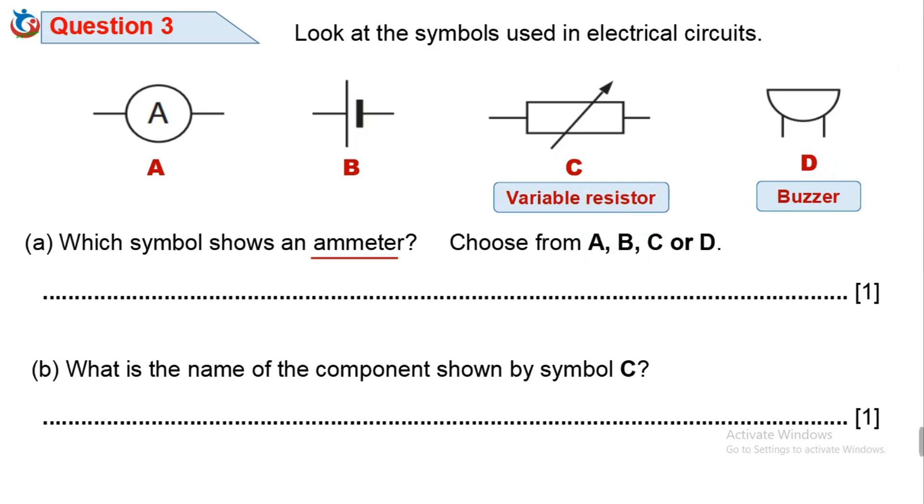D is buzzer. Buzzer is an output device that gives a beep sound in the presence of an electrical signal. C is a variable resistor. A resistor of which the electric resistance value can be adjusted. B is a cell. The cell converts stored chemical energy into electrical energy, allowing positive charges to flow from the positive terminal to the negative terminal in an electric circuit. A is an ammeter.